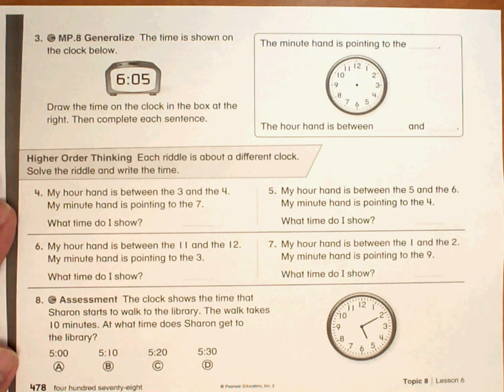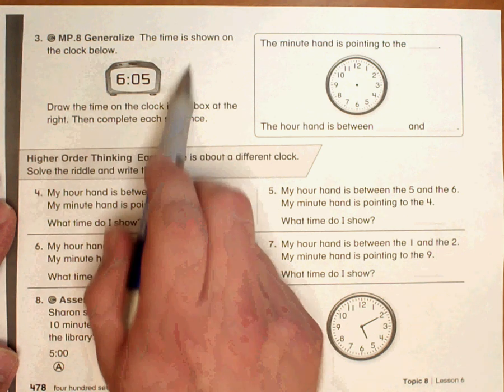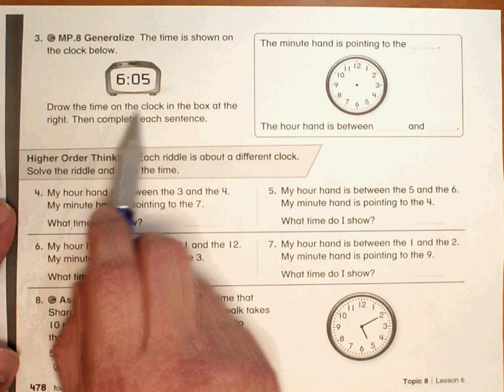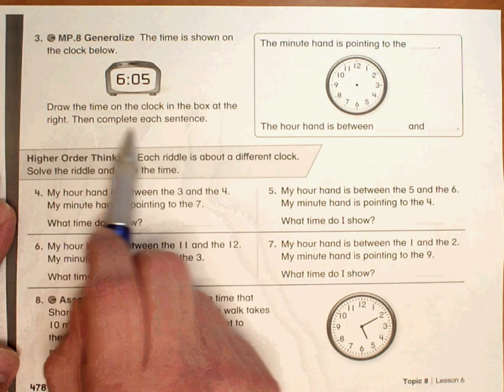This is problem number three on Homework 8-6. The time is shown on the clock below. Draw the time on the clock in the box at the right, then complete each sentence.